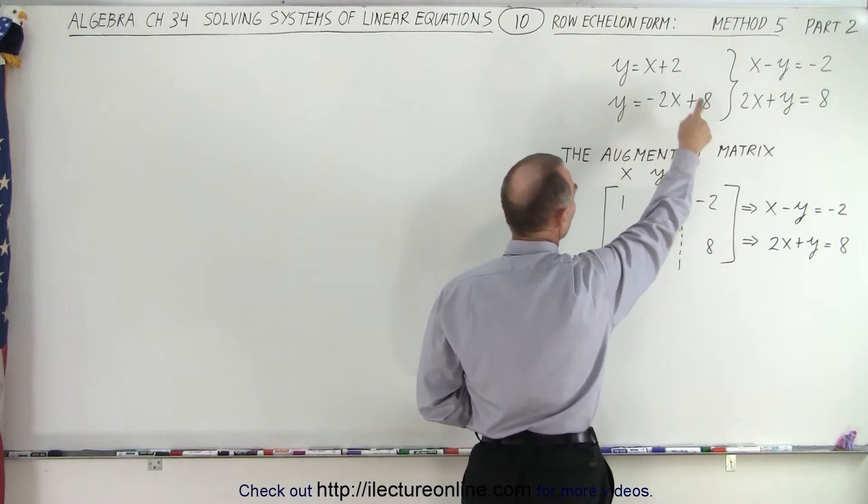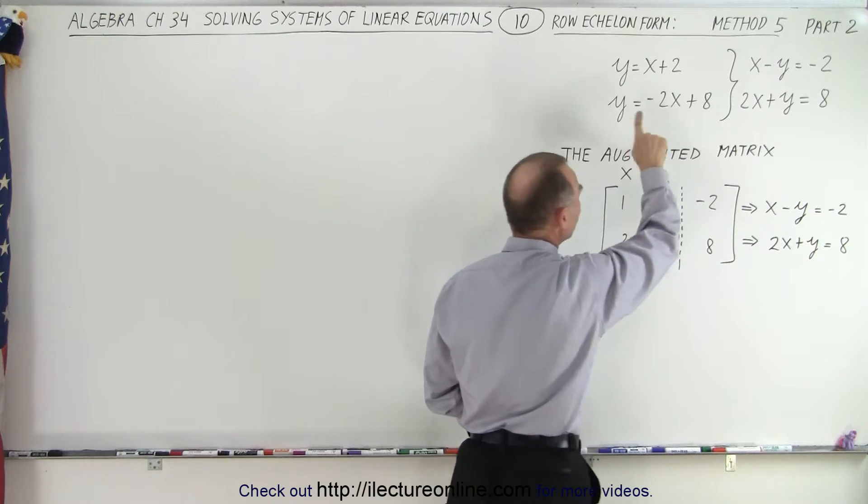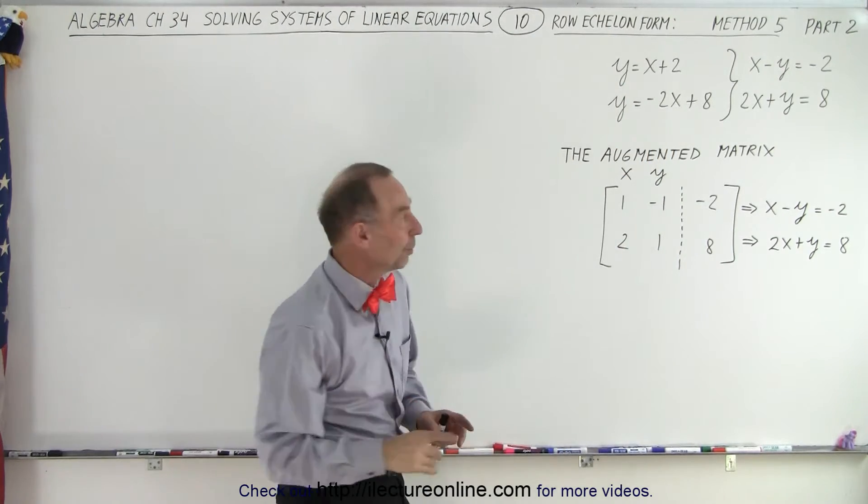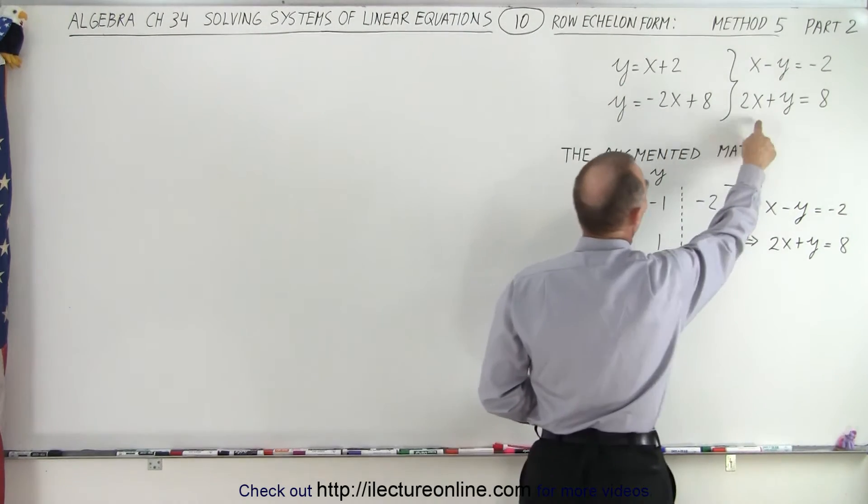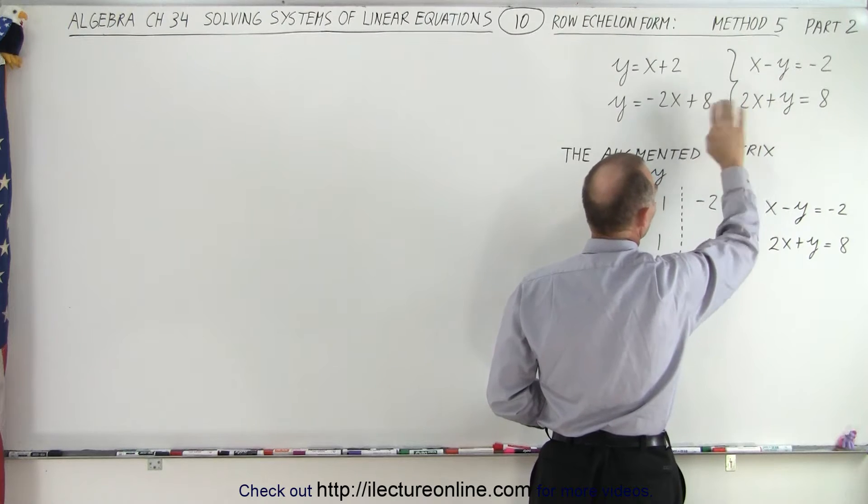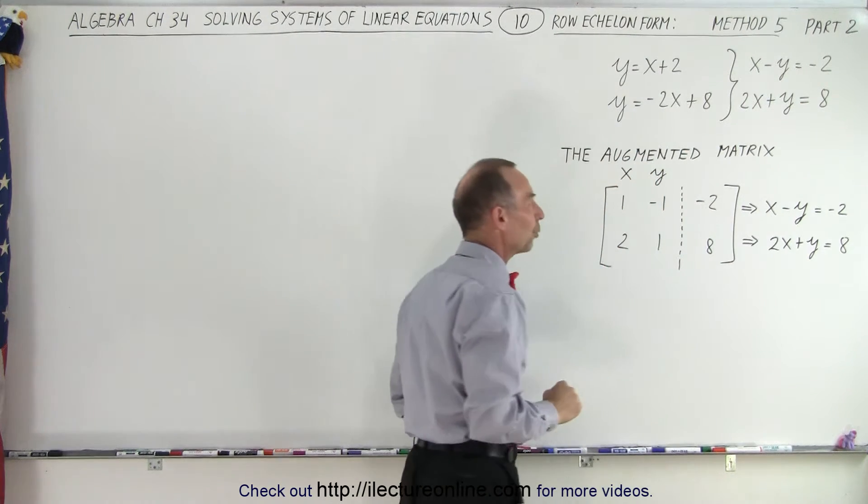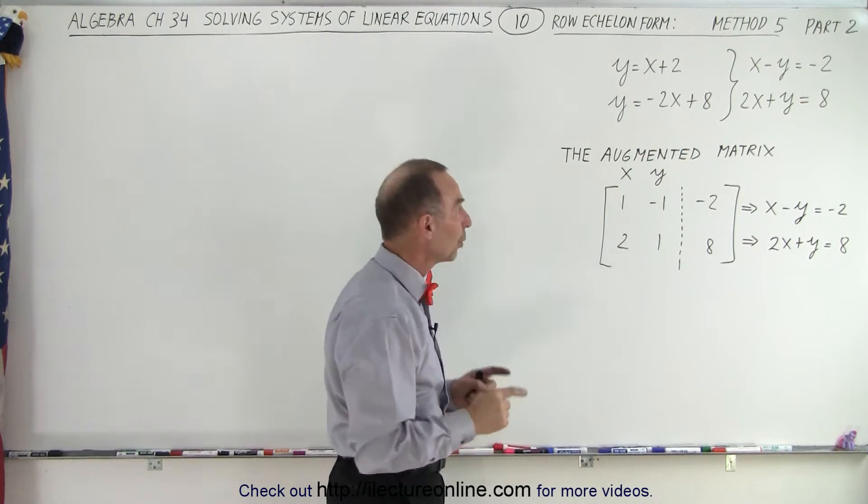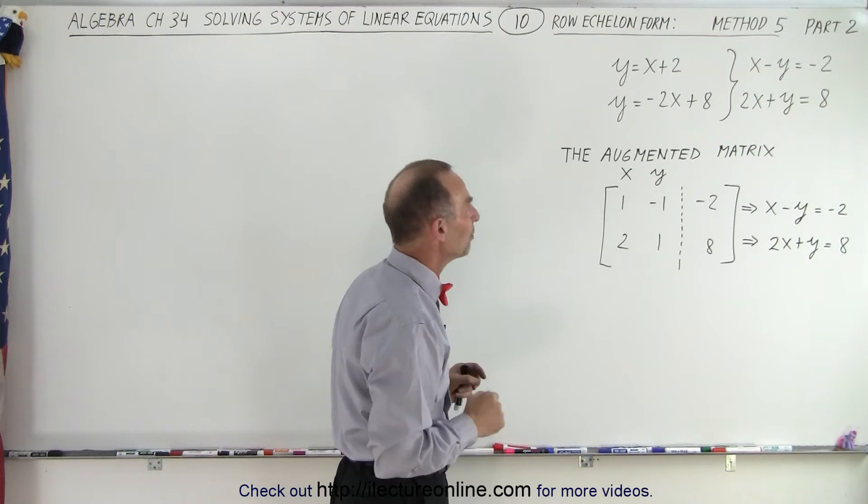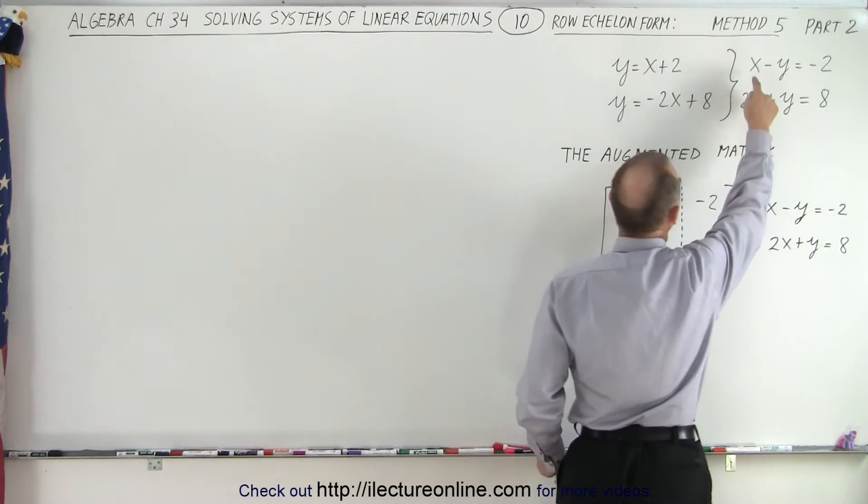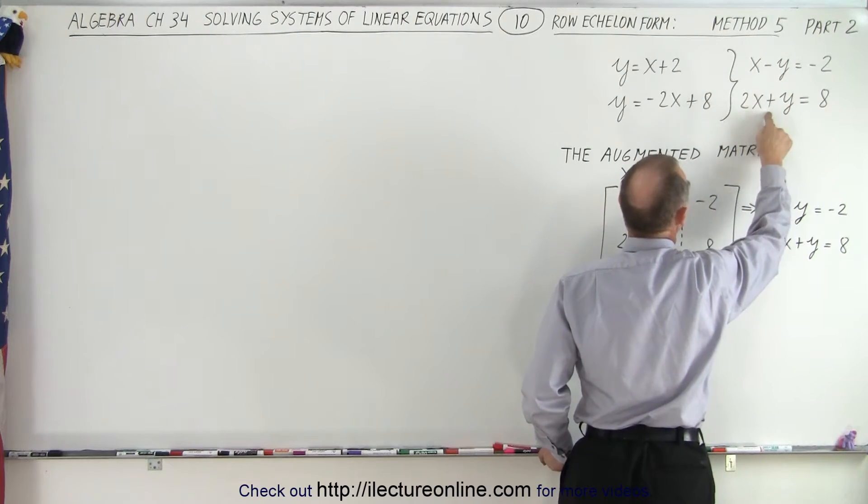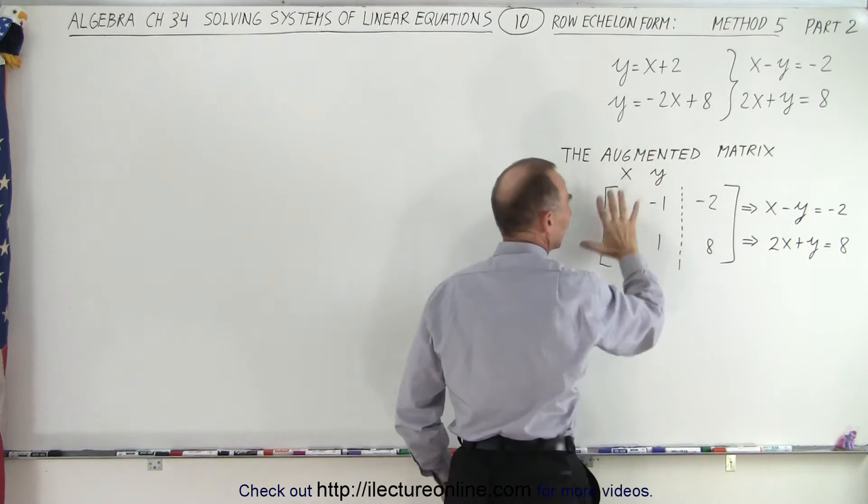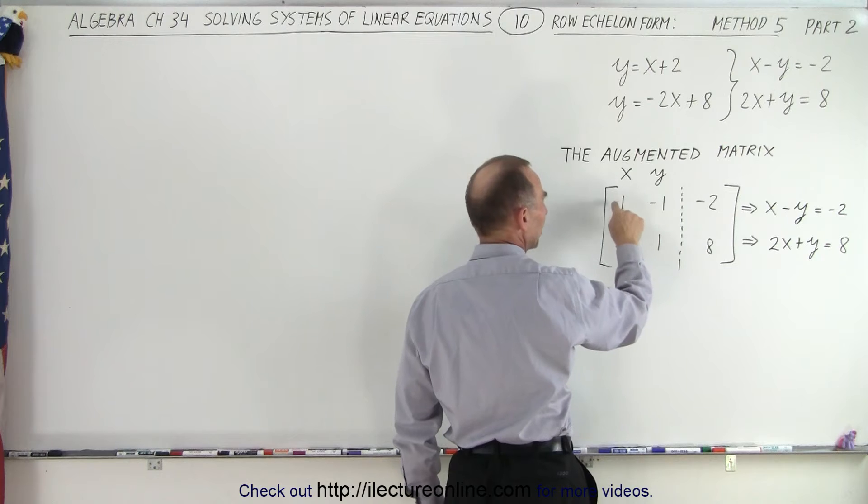Remember what we did on the previous video. We took the two equations in that form and placed them into a different form where we have the two variables on the left and the constants on the right. Then we're going to put those in what we call the augmented matrix. We take all the coefficients of the x's and the y's and the numbers and place them into a matrix.